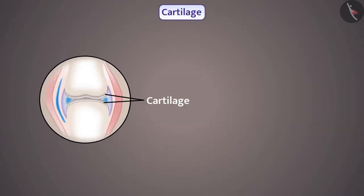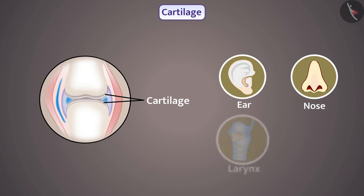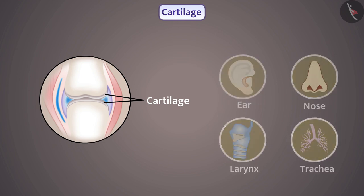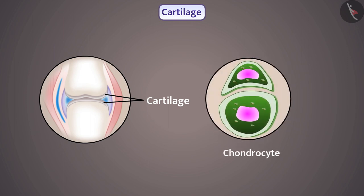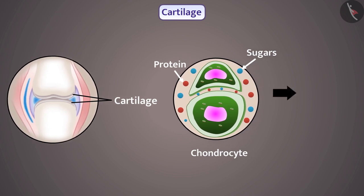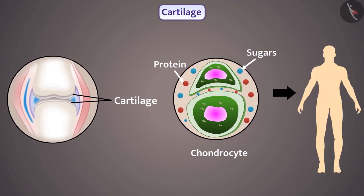Similarly, cartilage is also a type of connective tissue. Cartilage is present in our ear, nose, larynx, and trachea. The cells of this tissue, called chondrocytes, are flexible and widely spaced, which is why we can bend cartilage easily. Its cells are embedded in a matrix composed of proteins and sugars. Cartilage smoothens the joints of bones and gives shape and support to different organs.